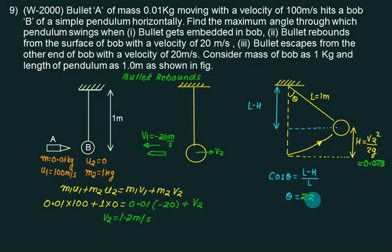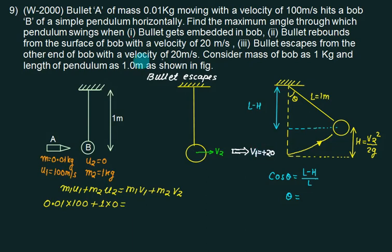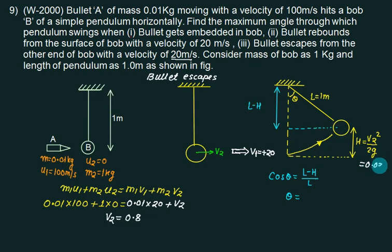Substituting back, theta comes out to be 22.8 degrees. Third case: the bullet escapes — it pierces through the bob. Assuming no mass change during piercing, v1 is taken as positive 20. Applying conservation of momentum again gives v2 equals 0.8 m/s, h equals 0.0326, and theta equals 14.67 degrees.